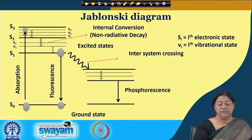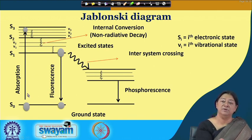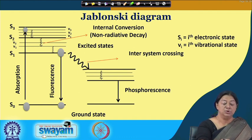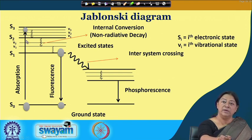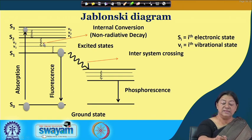In the Jablonski diagram, this gives us a whole picture of what can actually happen. The dark lines represent the electronic levels, and within the electronic levels we have the vibrational levels. When absorption occurs, the molecule is in a higher electronic state or higher vibrational level. It will gradually dissipate this energy and come down to the lowest electronic state, whereby it can radiatively lose the energy — which amounts to fluorescence. This non-radiative decay brings the molecule to the lowest singlet state.